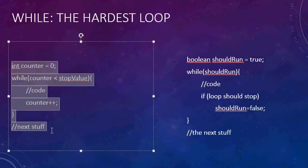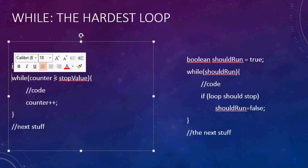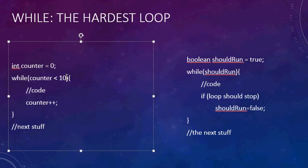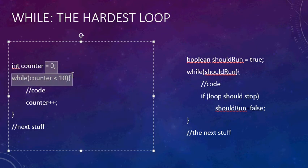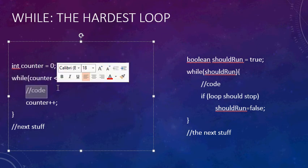When you see this loop, you just know it's going to run a set number of times. If stopValue is 10 and counter starts at 0, the loop runs 10 times — for counter 0 through 9. If counter starts at 1, it runs 9 times. Both versions serve the purpose of running the code inside 10 times; they're equivalent as long as the code inside doesn't depend on the actual value of the counter variable.